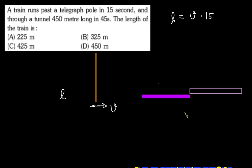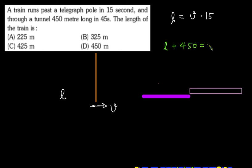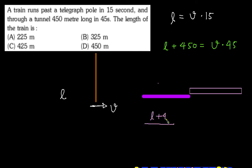So in the second case, the distance will be 450 plus L. Distance equals velocity into time, with time equal to 45 seconds. Now let's divide both equations and solve. It will come to L. L plus 450 divided — the calculation gives L plus 450 over 45. Just write it and solve: L equals 225 meters. So L is 225 — solved.